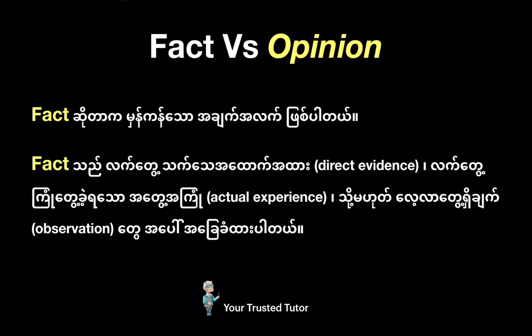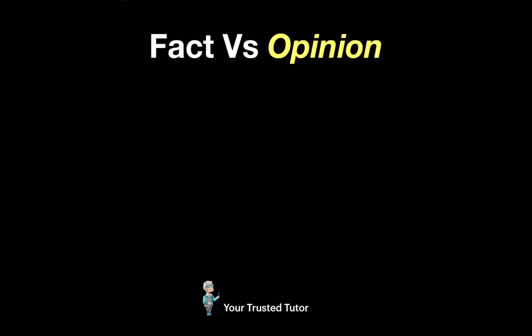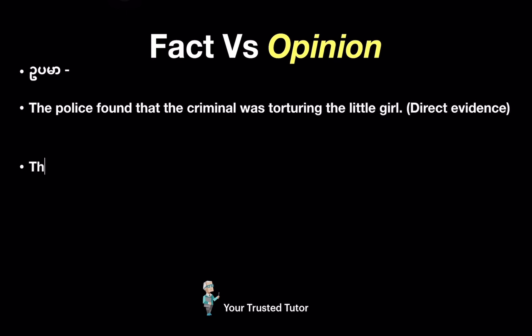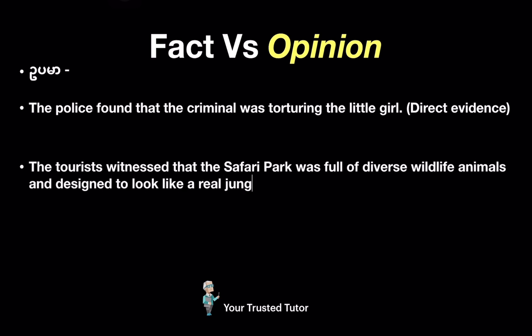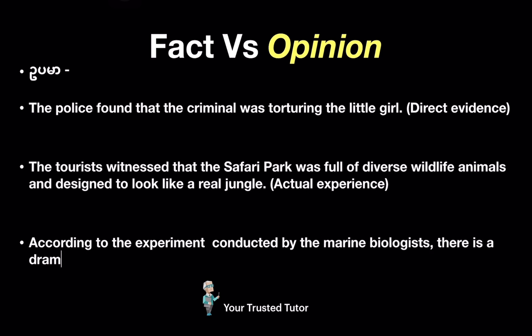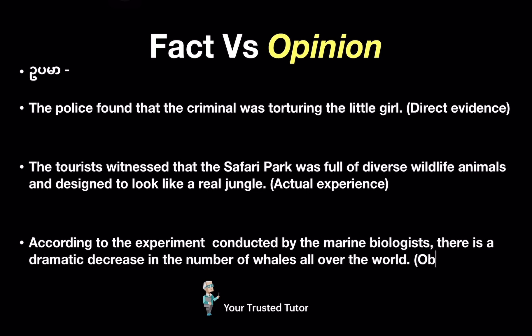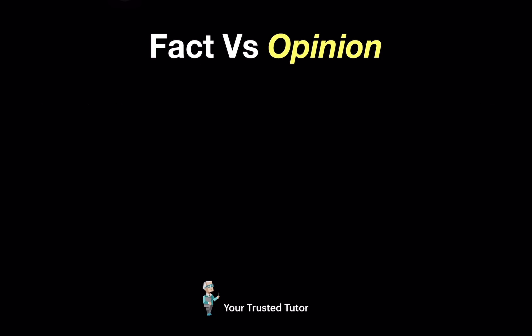To be clear, I will give some example sentences about factual information. For example, the police found that the criminal was torturing the little girl — this is based on direct evidence. The tourist witnessed that the safari park was full of diverse wildlife animals and designed to look like a real jungle — this is based on actual experience. According to the experiment conducted by marine biologists, there is a dramatic decrease in the number of whales all over the world — this sentence is based on observation.